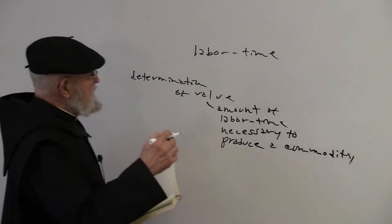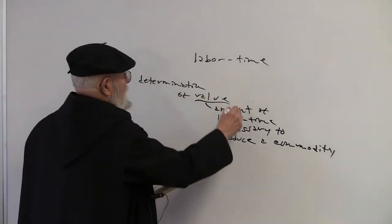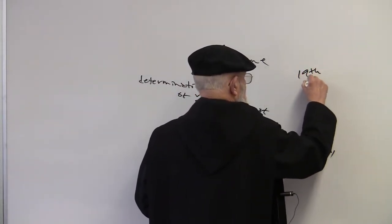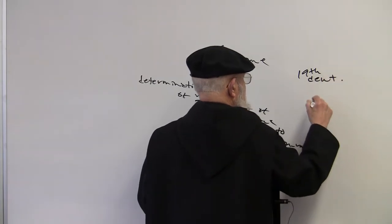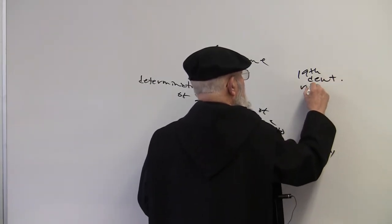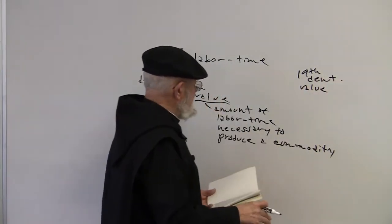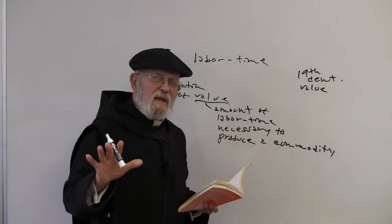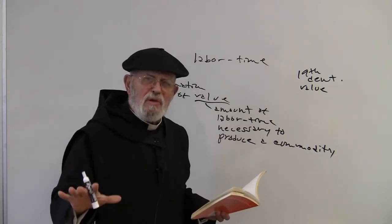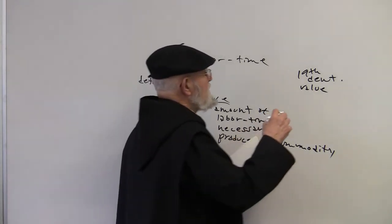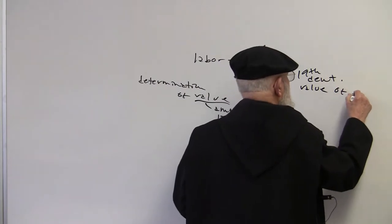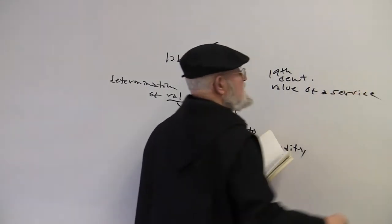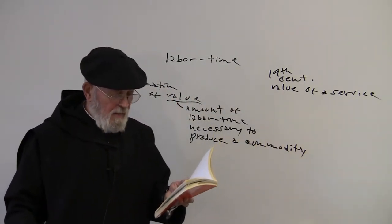And what is value? Value is the amount of labor time necessary to produce a commodity. This was a real problem in the 19th century. The value of a commodity can be relatively simply determined, but the value of a service is somewhat more difficult.